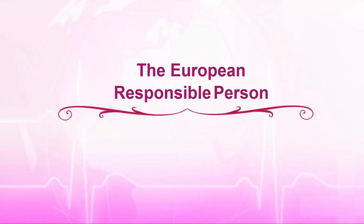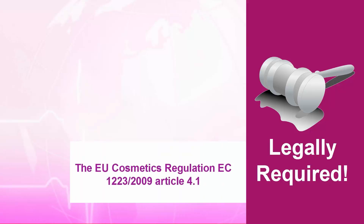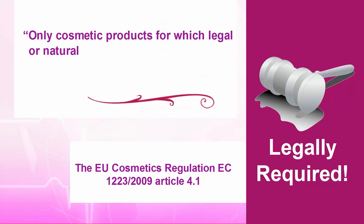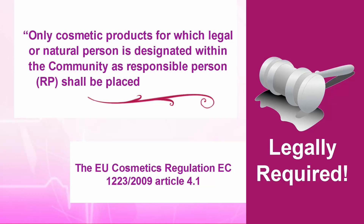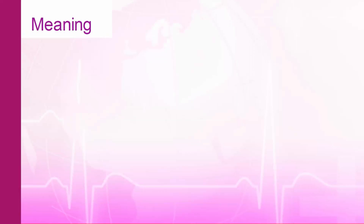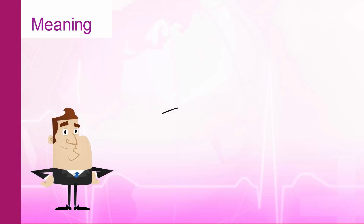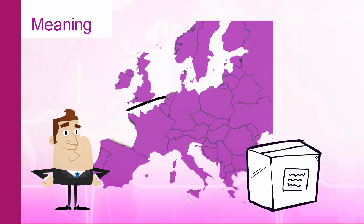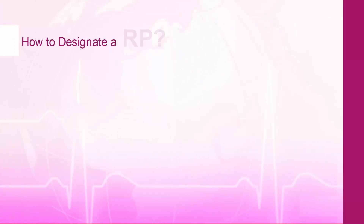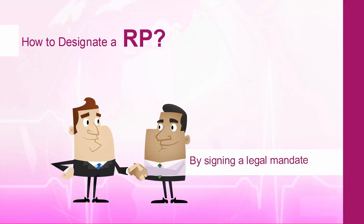The European Responsible Person is legally required. The EU Cosmetics Regulation, EC Article 4.1 states: only cosmetic products for which a legal or natural person is designated within the community as responsible person shall be placed on the market. This means there is an obligation to have an RP linked to the product, and the RP must be established within the European community. An RP is designated by signing a legal mandate.